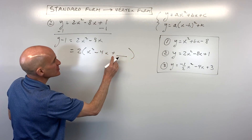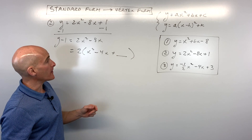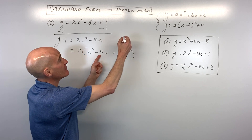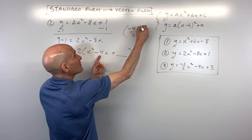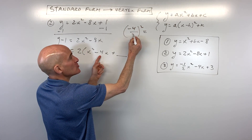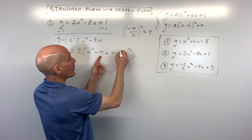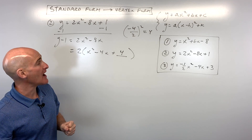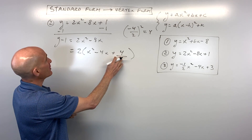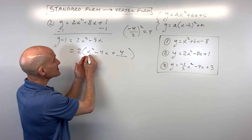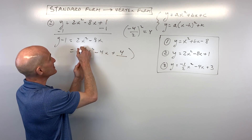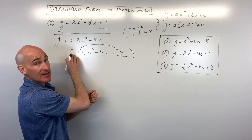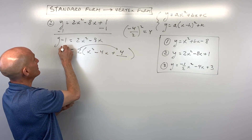Take the coefficient in front of x, divide by 2, and square it: negative 4 divided by 2 is negative 2, and negative 2 squared is positive 4. I'm going to add 4 inside the parentheses. Here's where students sometimes go off track — they think to add 4 to the other side, but because this 4 is inside the parentheses, it's actually 2 times 4, which is 8. So we're adding 8 to the right side, and we must add 8 to the left side to keep the equation balanced. That gives us y plus 7 equals 2 times the expression.